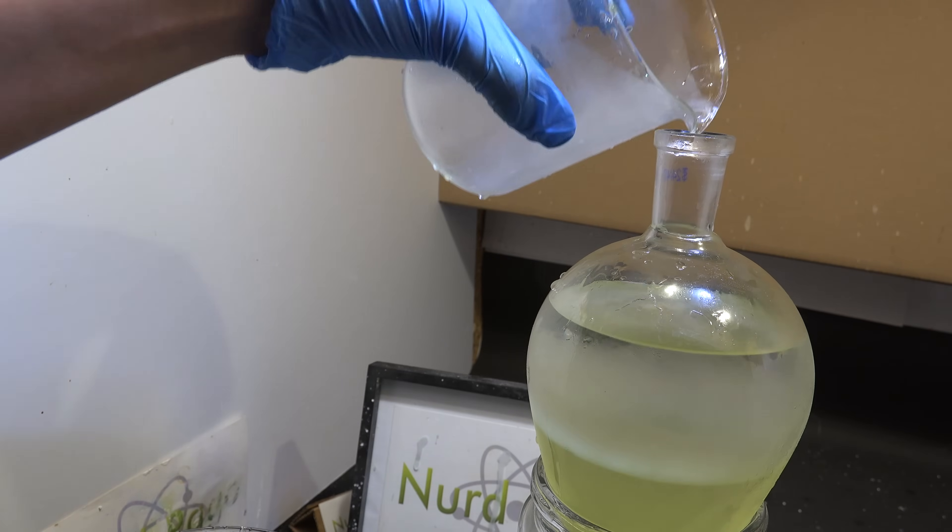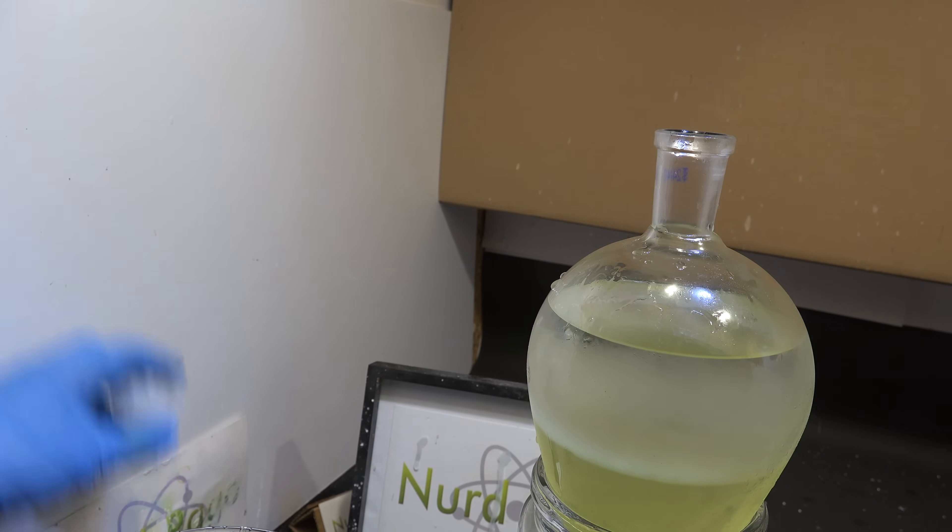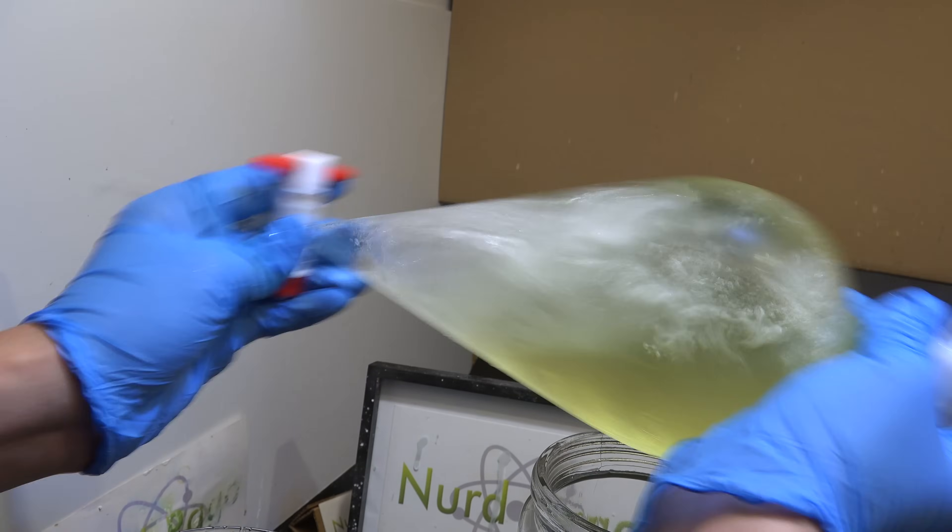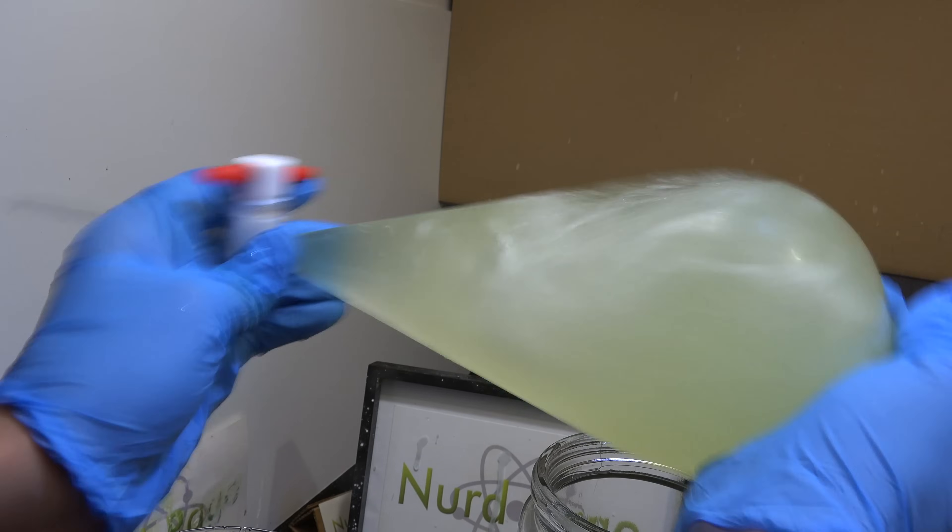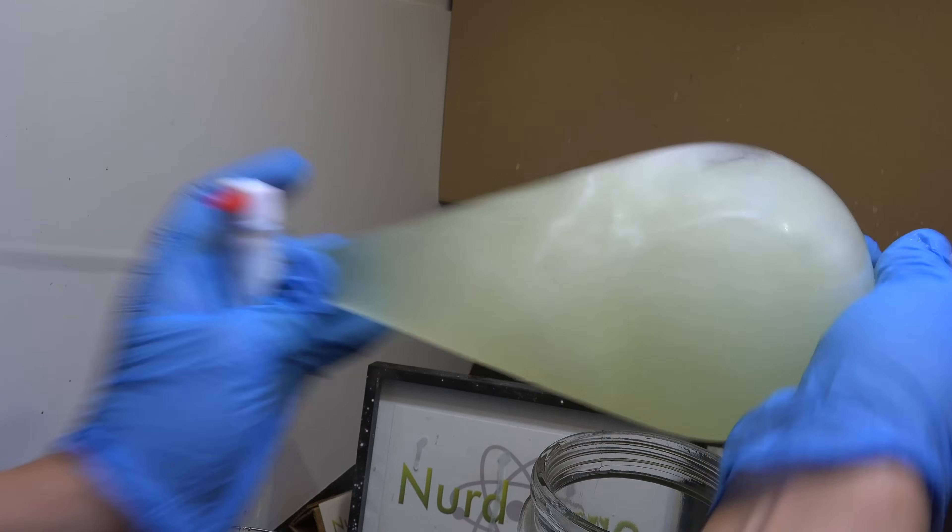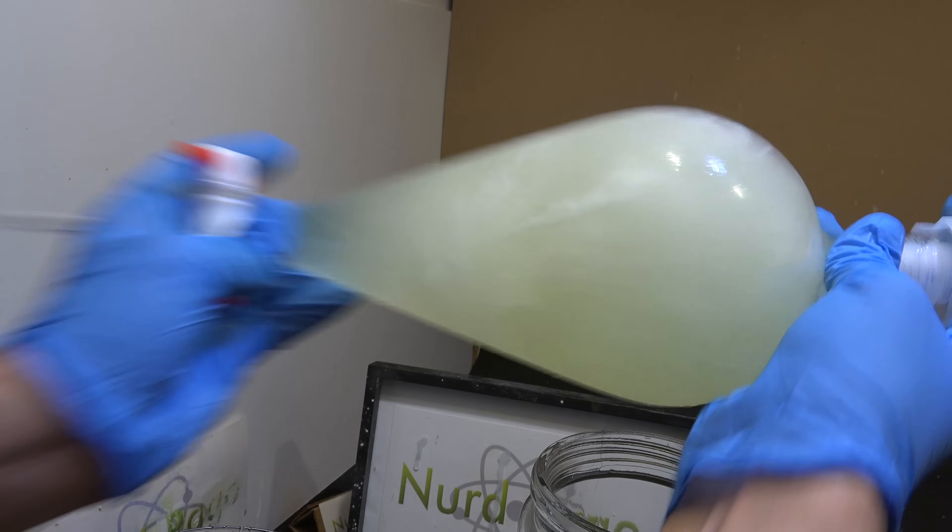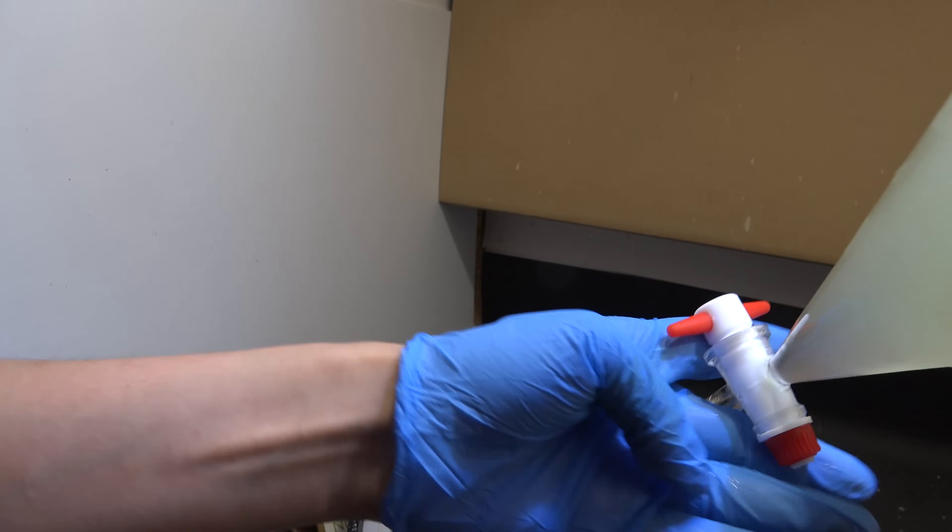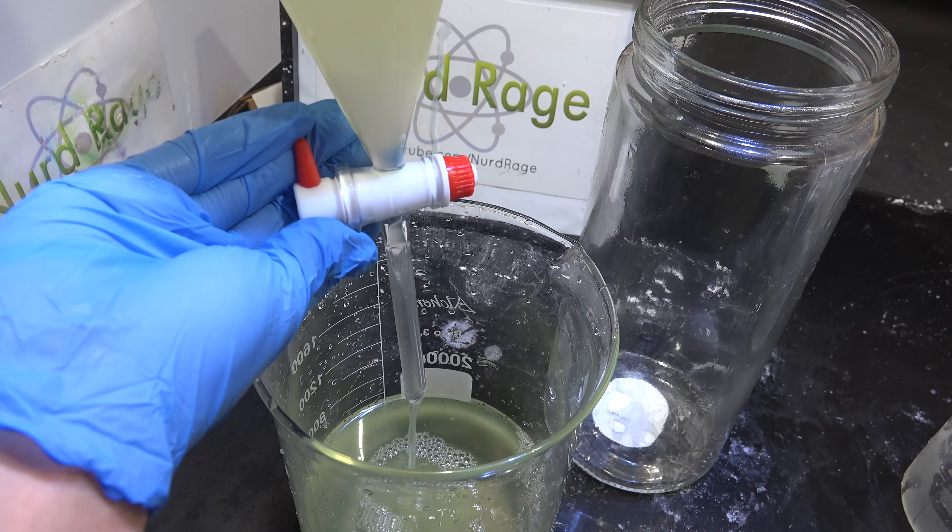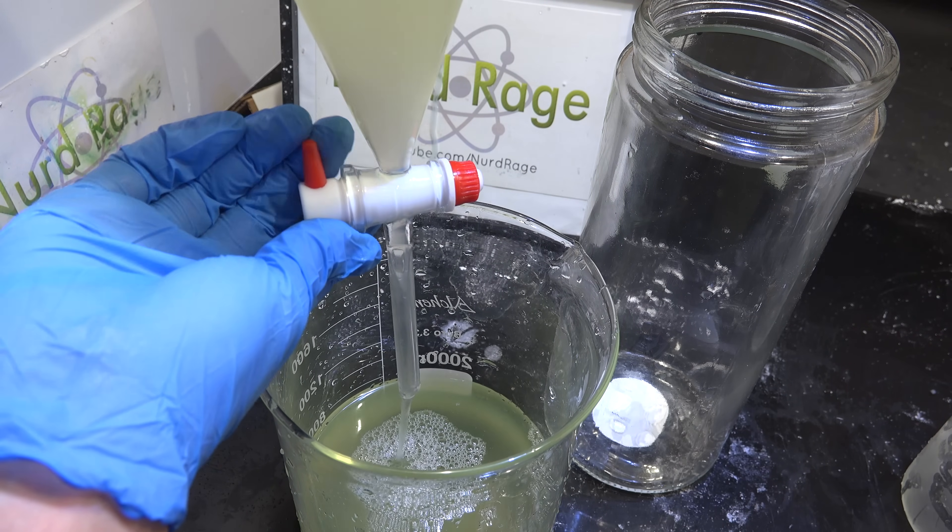Now you professional chemists are probably yelling at the screen right now. Extracting it this way is not as efficient as using fresh ether with fresh solution. I'm doing it this way because this is all the diethyl ether I have so I have to reuse the same amount. I'm not going to recover all the gallium possible but at least we'll have enough to demonstrate the process. Anyway, once again drain off the aqueous layer and extract more solution until you've gone through it all.